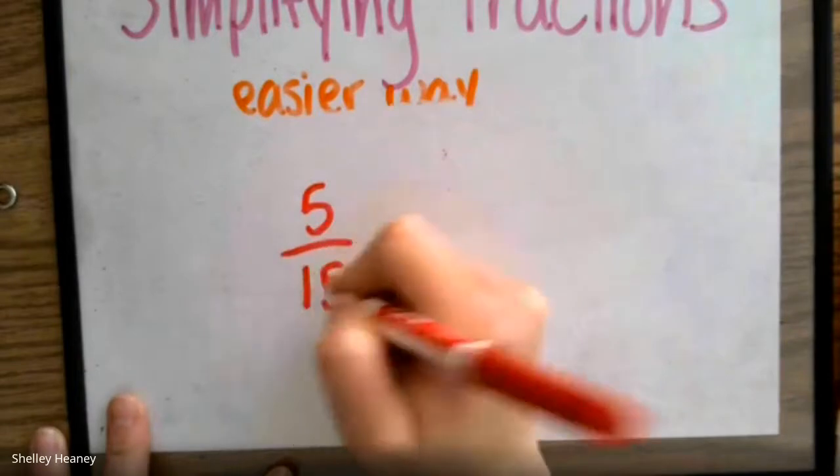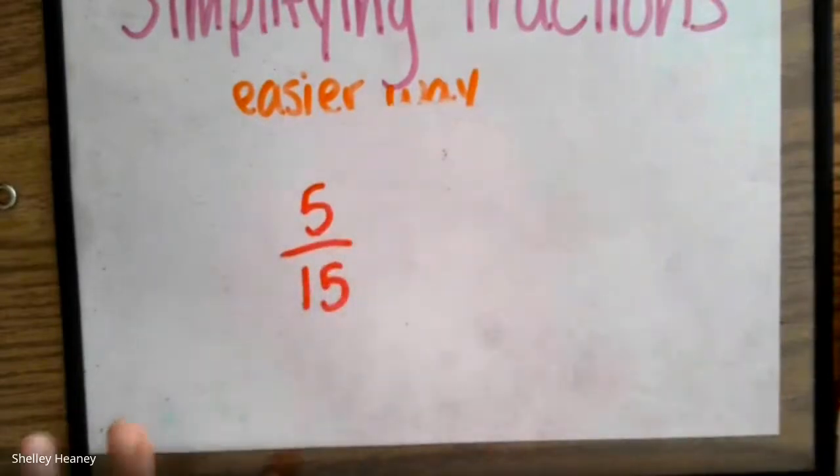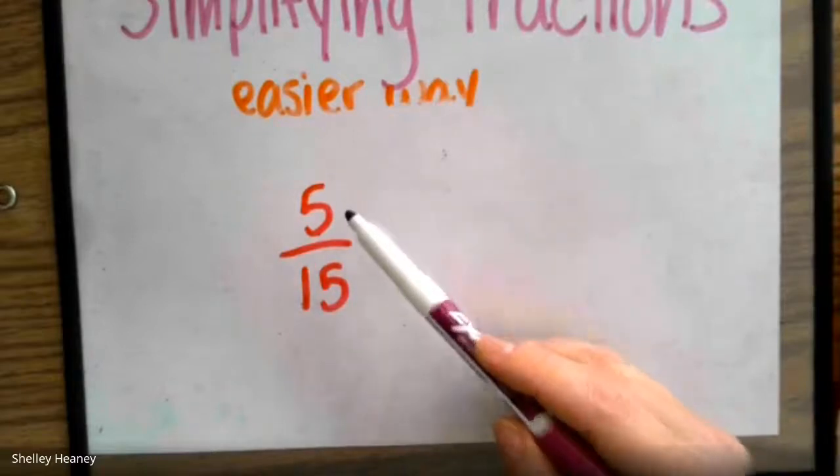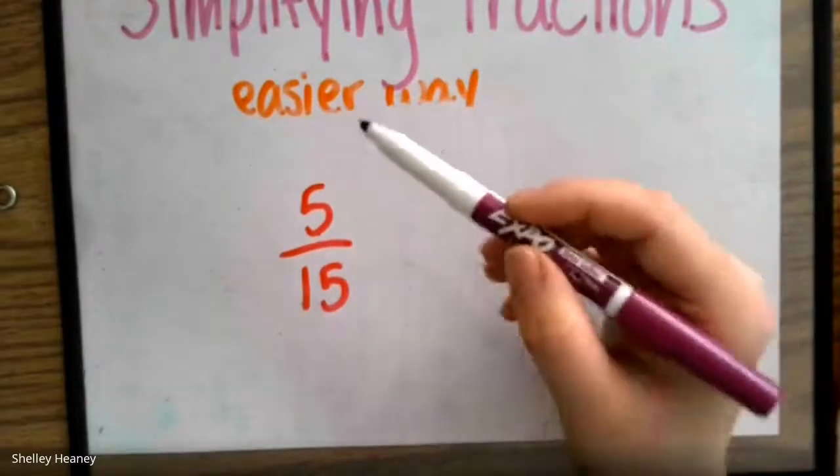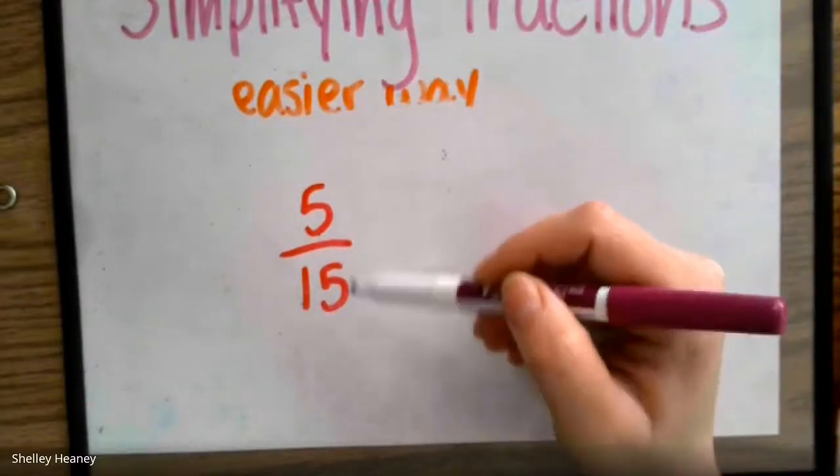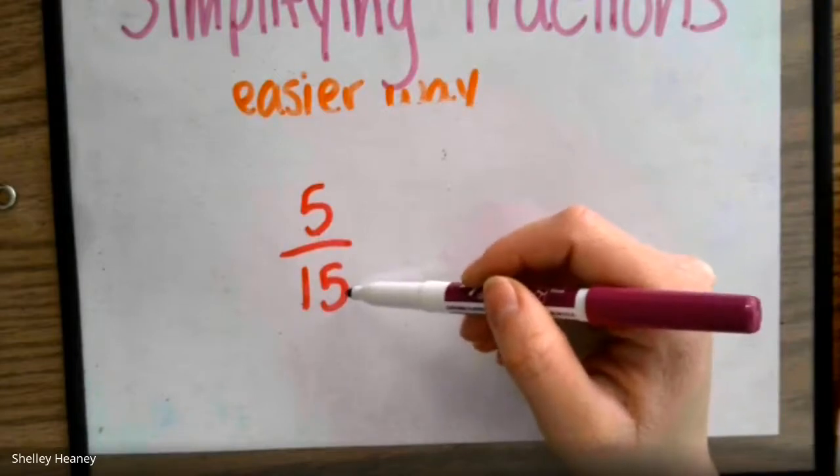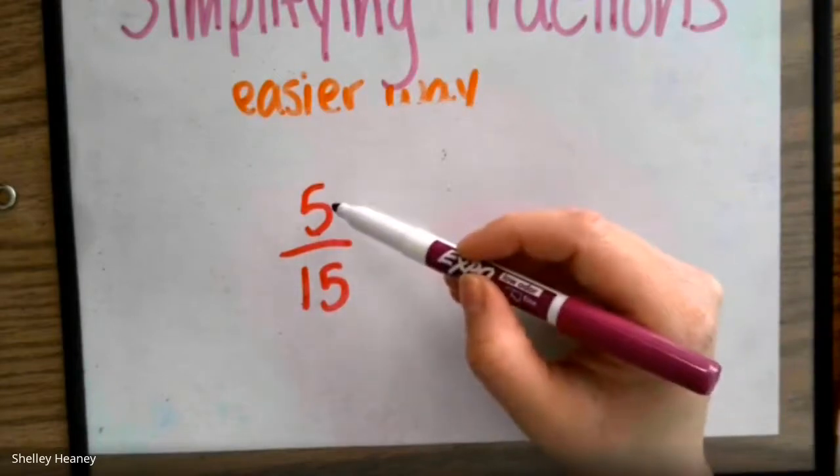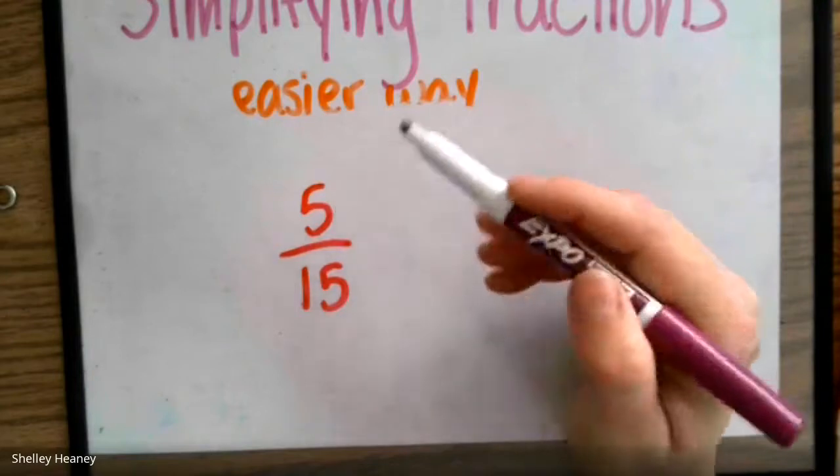Let's just try one more number. 5 and 15. What could we divide on the top and the bottom to make this smaller? I can't try by 1 and I can't try by 2 because 5 cannot be divided by 2. Can I try by 3? I know 15 divided by 3 will work, but does 5 divided by 3 work? Nope.